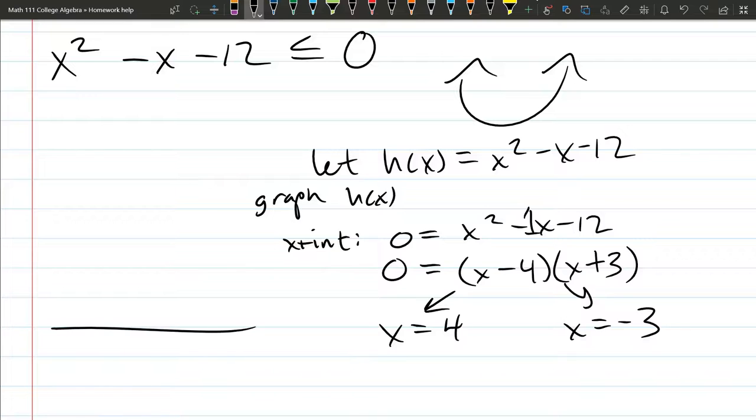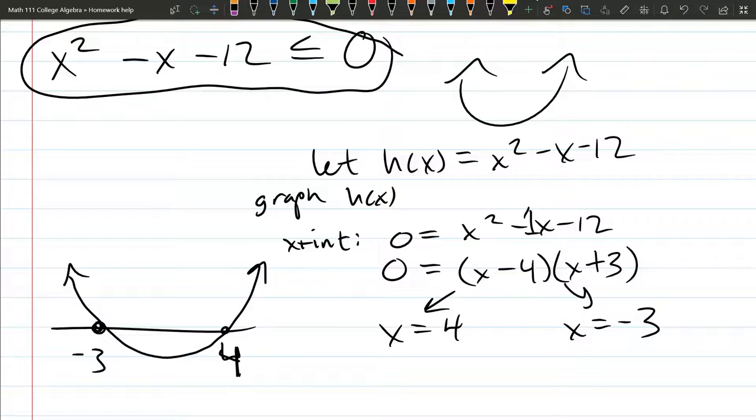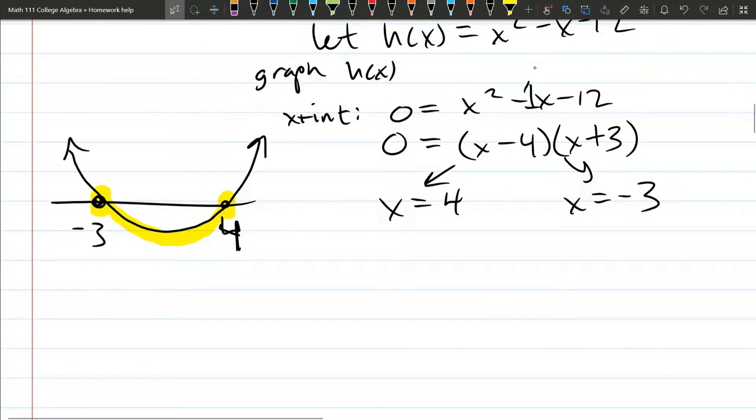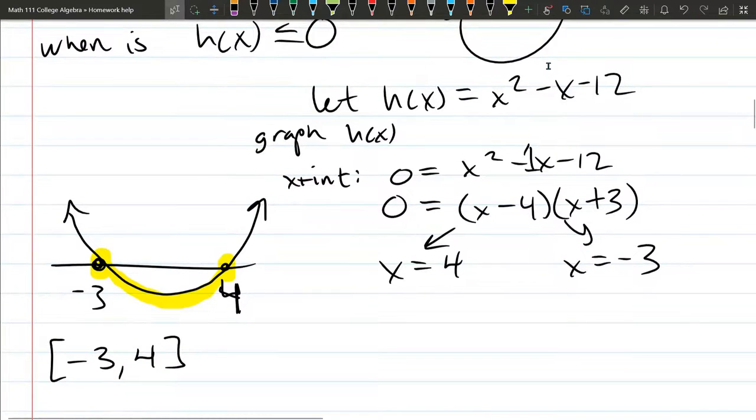These are the x-intercepts. Here's negative 3, positive 4. We have a happy parabola, so it's going to be graphed like this. And now we're ready to figure out the solution to this inequality. I called this function h of x. So I'm just swapping in h of x for that. So I need to answer the question, when is h of x negative or equal to 0? When is it less than or equal to 0? I'm going to highlight on the graph. It's equal to 0 at the x-intercepts. And it's less than 0 in the middle. Which means the solution to this is negative 3 to 4, closed at both, because it's okay to equal 0.